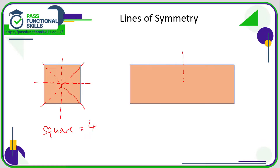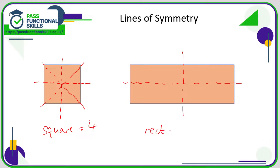A rectangle — we can fold it down the center, and we can fold it horizontally as well, so it has two lines of symmetry. Unfortunately, if you try to fold diagonally and get one corner to meet the other, it won't work. Just give it a go and see if you can fold a rectangle across the diagonal and get the corners to match up — it just won't happen. So a rectangle only has two lines of symmetry.